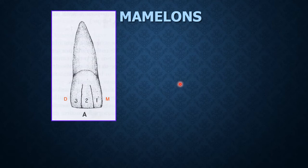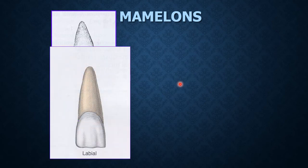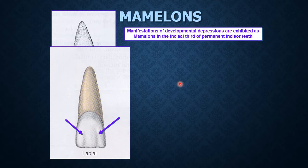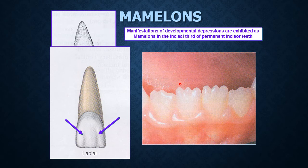Now we'll look at mamelons. As you can see on this permanent maxillary central incisor, the markings numbered one, two, and three correspond to the meso-facial, middle facial, and disto-facial lobes from which these structures are formed. These are the developmental depressions, and their manifestations are exhibited as mamelons, which are present on the incisal one-third of permanent maxillary and permanent mandibular incisor teeth.